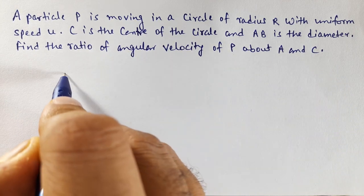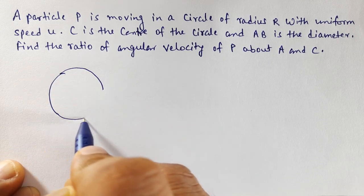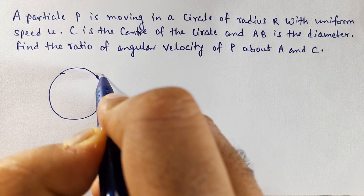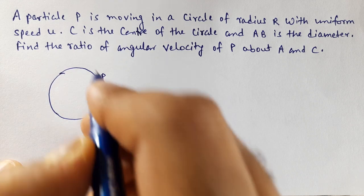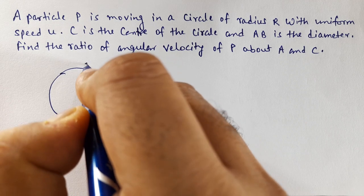So let's draw a circle first. There is a particle at point P. This is moving with uniform speed U. Speed is uniform in circular motion.